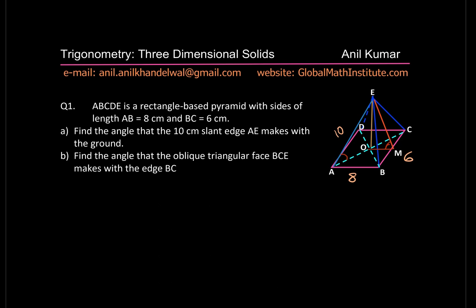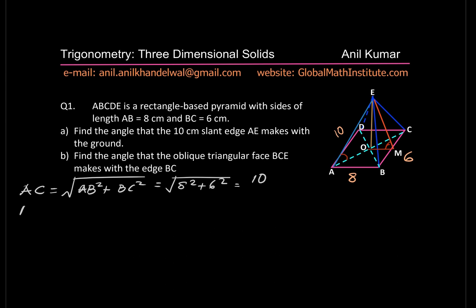We're given the two sides of the rectangle, so we can find diagonal AC using the Pythagorean theorem. AC = √(AB² + BC²) = √(8² + 6²) = √(64 + 36) = √100 = 10 cm. Now we can find AO: AO = half of AC = half of 10 = 5 cm.